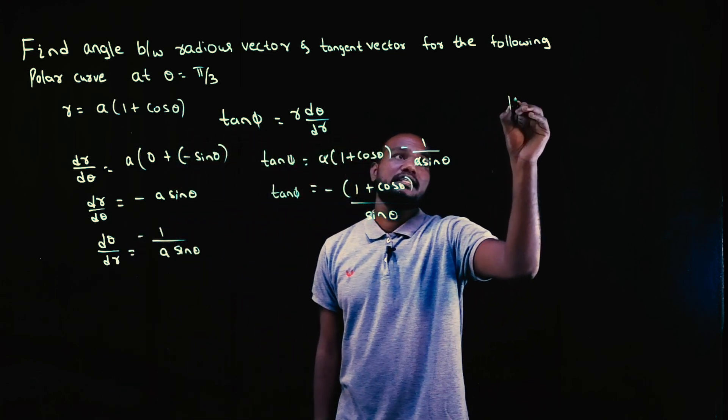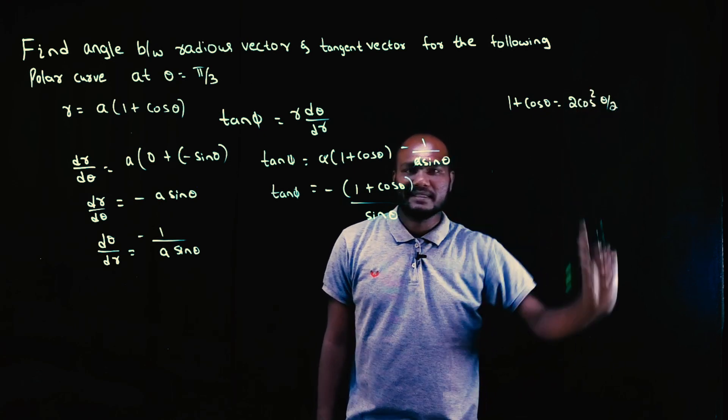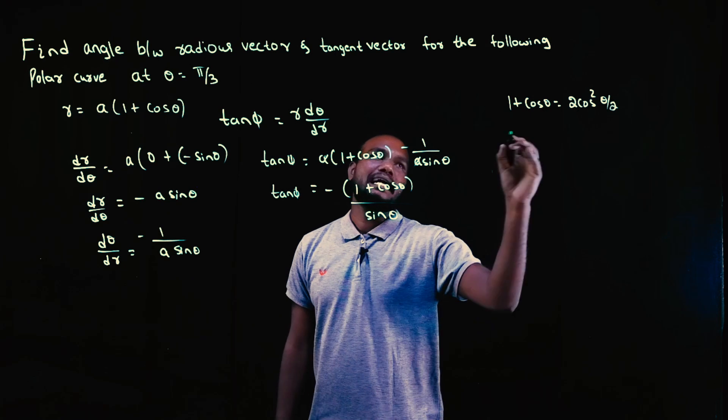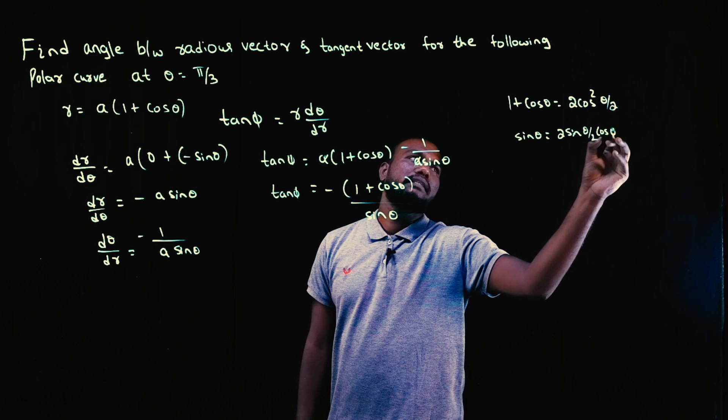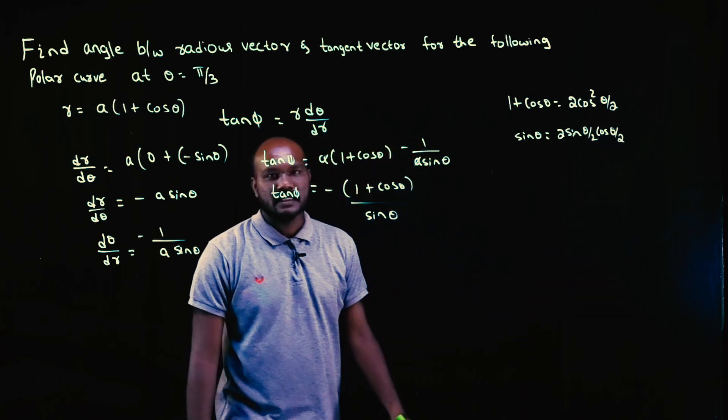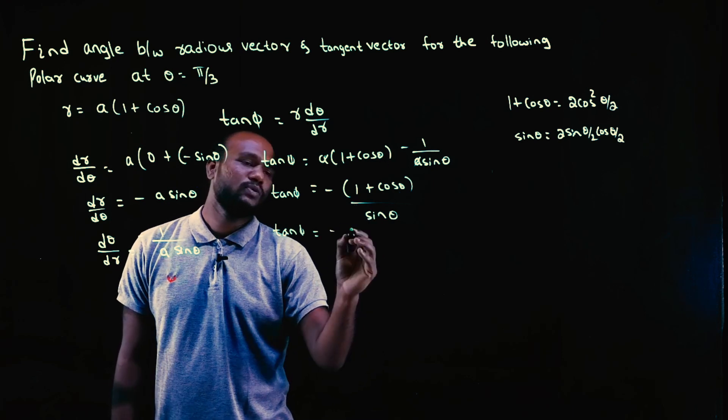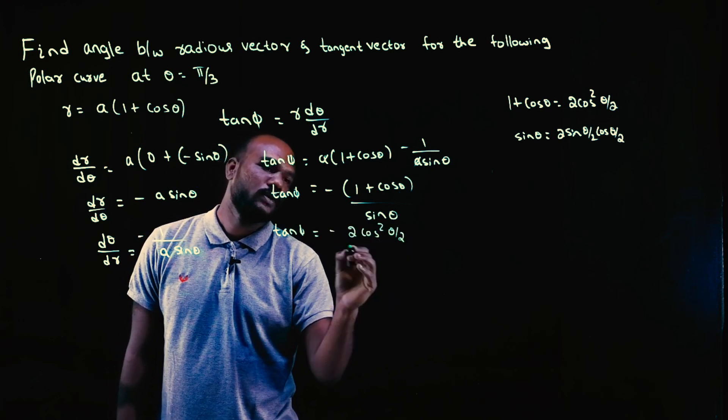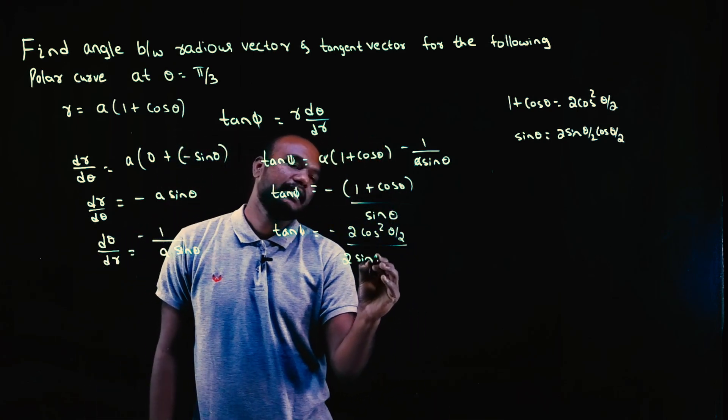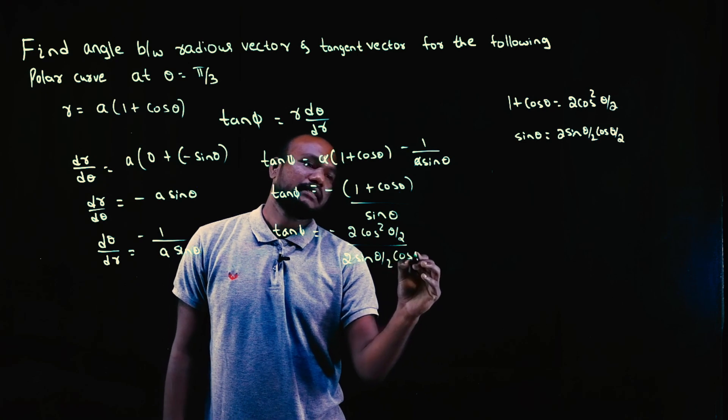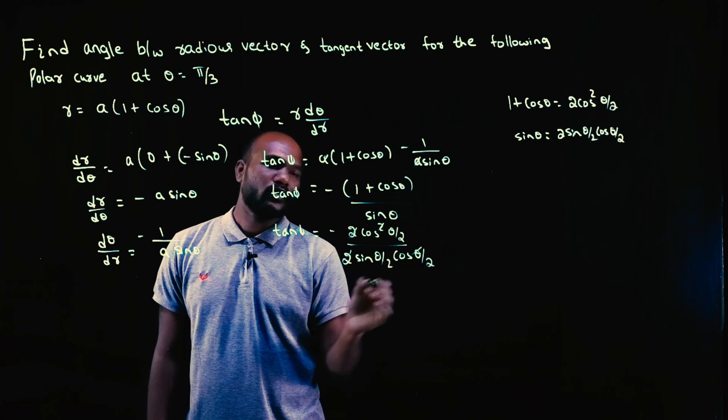We need to know this formula. This is an entirely important formula: one plus cos theta is two cos squared theta by two. You need to remember sine theta formula is two sine theta by two cos theta by two. So tan phi equals minus two cos squared theta by two divided by two sine theta by two cos theta by two. The two twos get cancelled, one cos and one cos get cancelled.